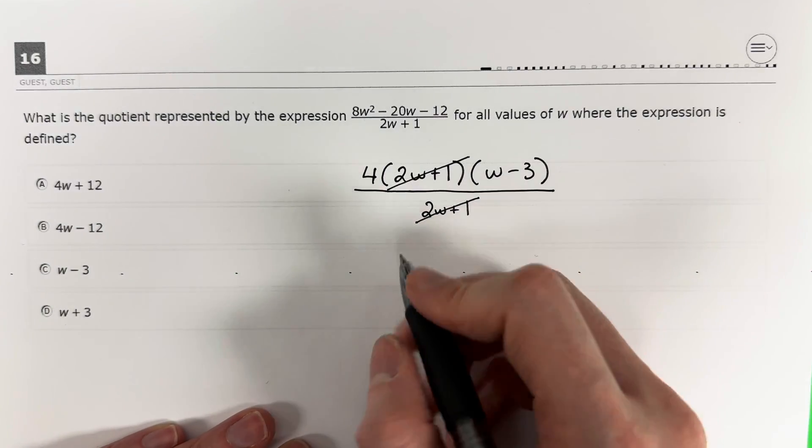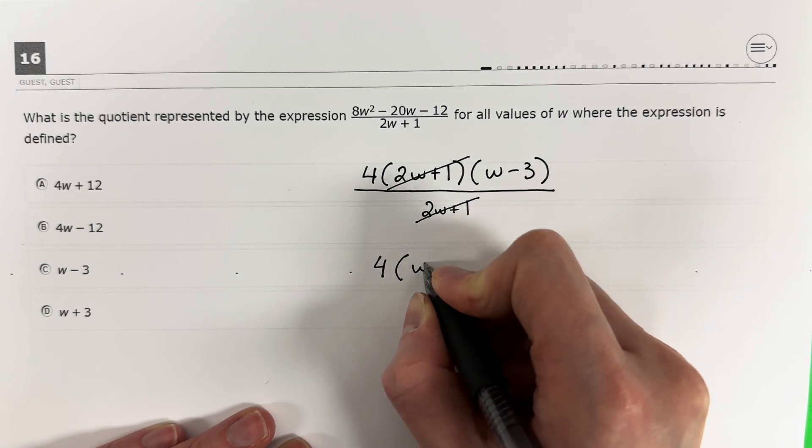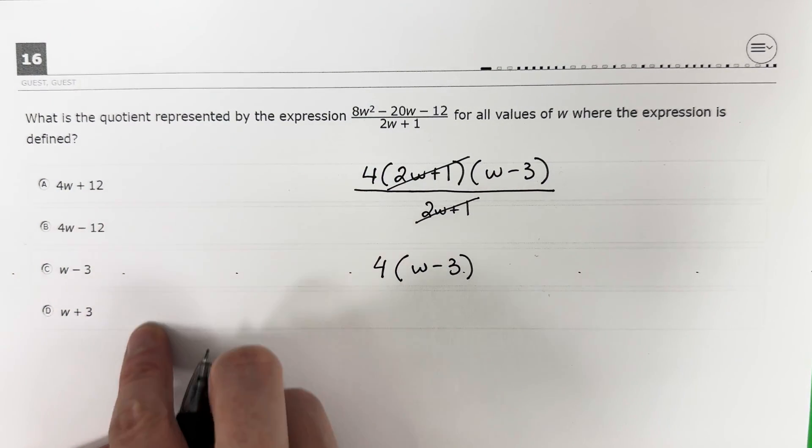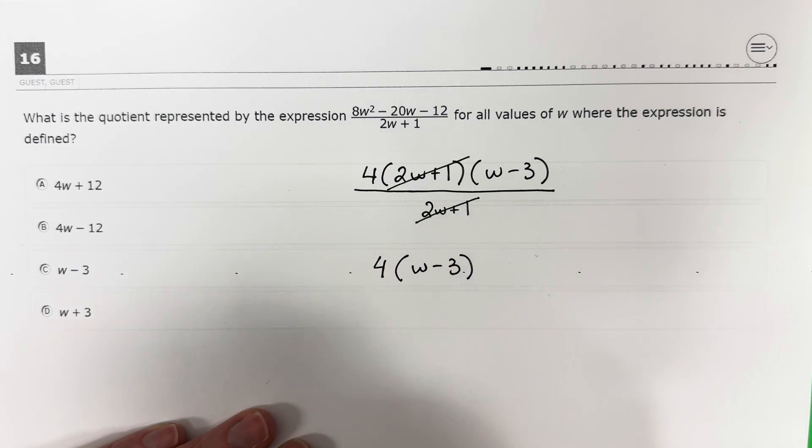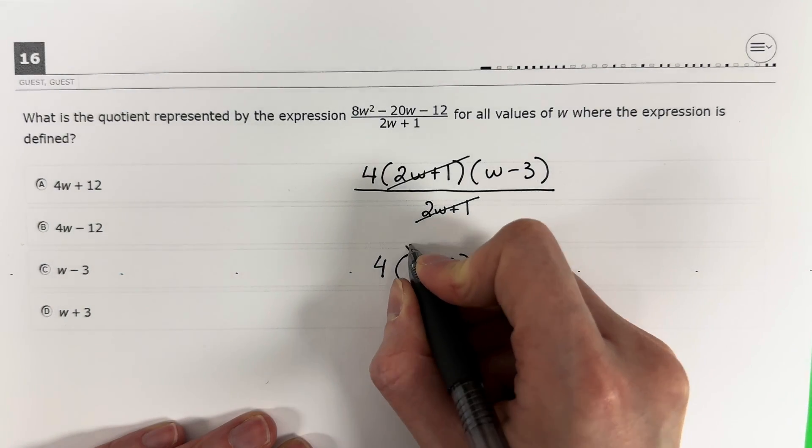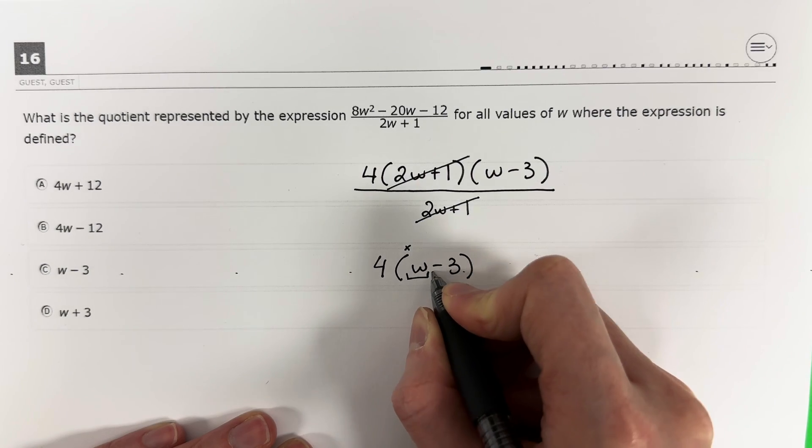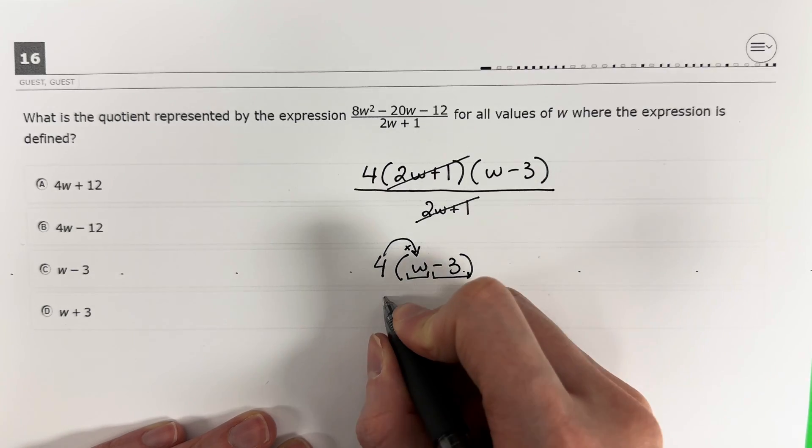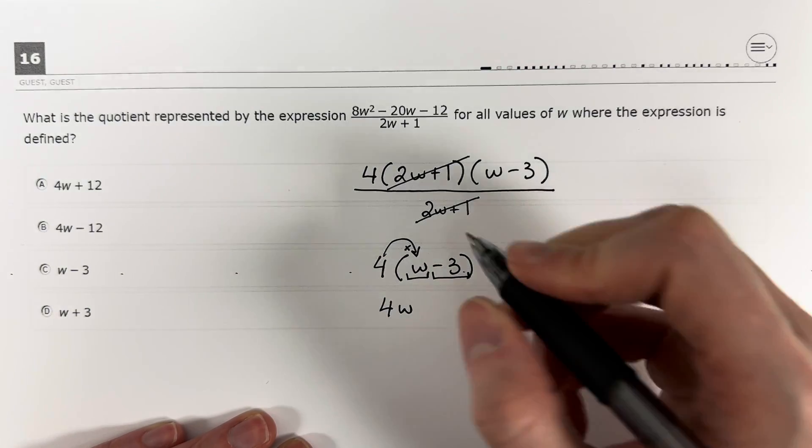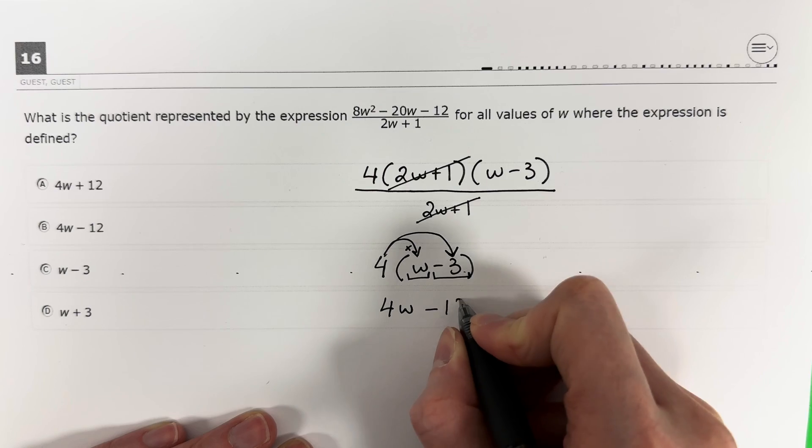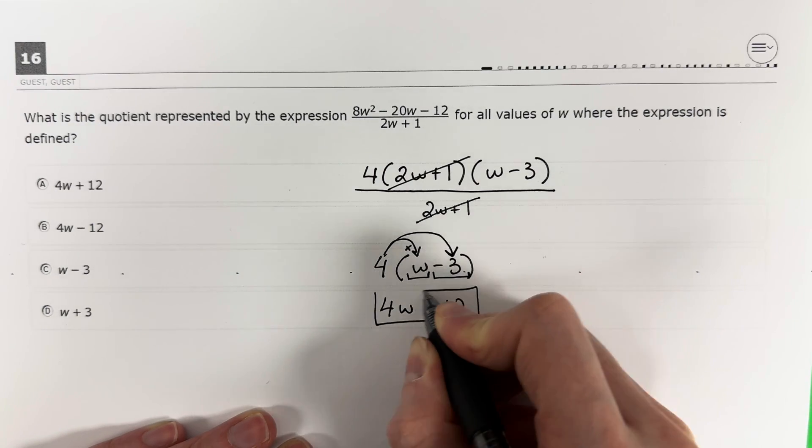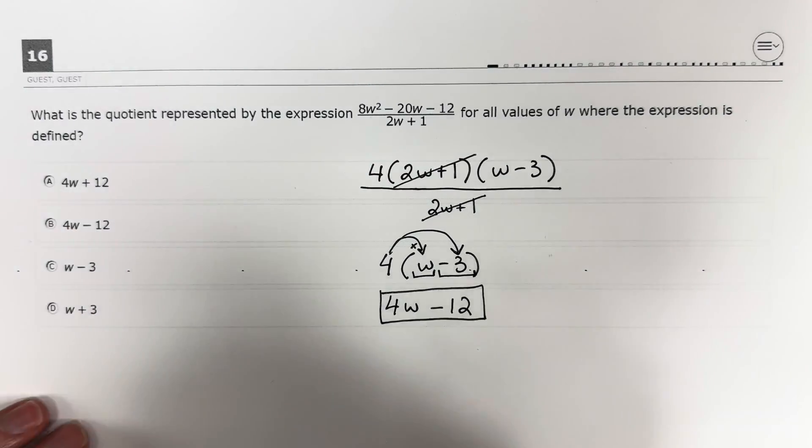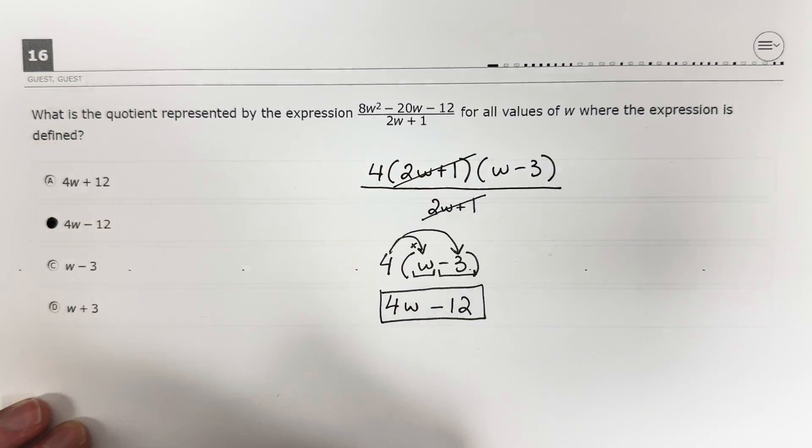What do I have left? I just have 4, parenthesis, w minus 3, and nothing down right now. Now, this answer is not available here because I'm going to need to go ahead and distribute. I need to multiply. Parenthesis means multiply. 4 times w is 4w. 4 times negative 3 is negative 12. That's a simplified version. So which one is my answer? Looks like B is my answer. 4w minus 12.